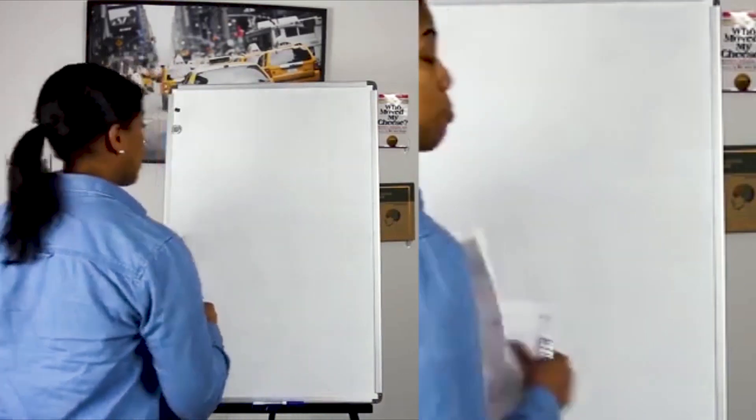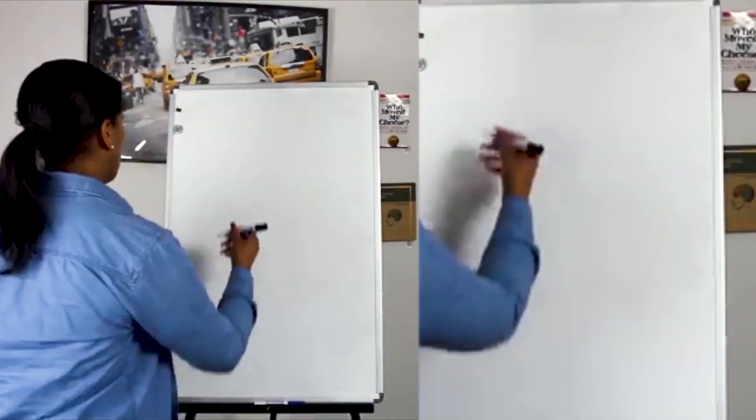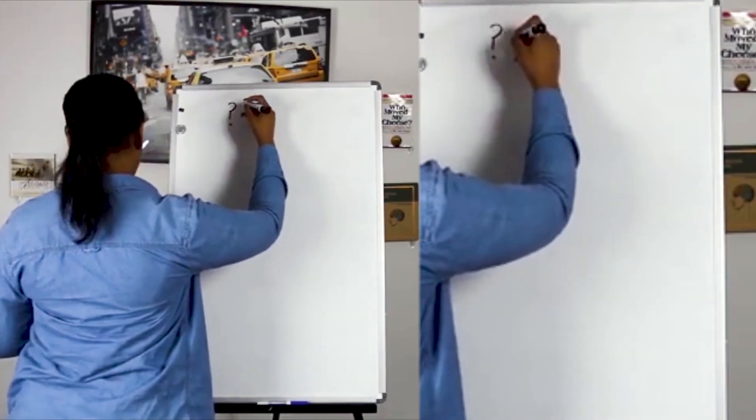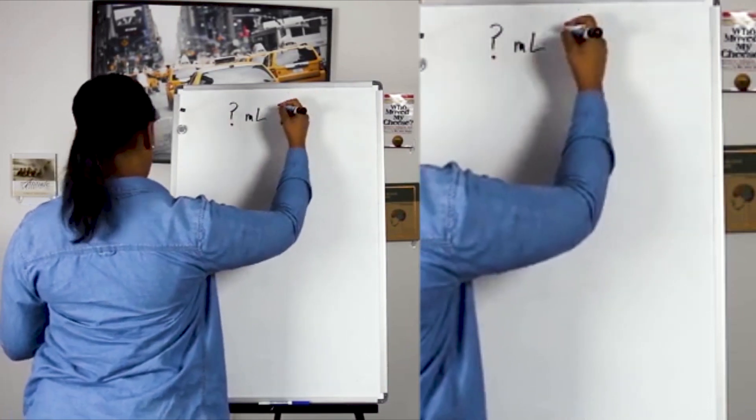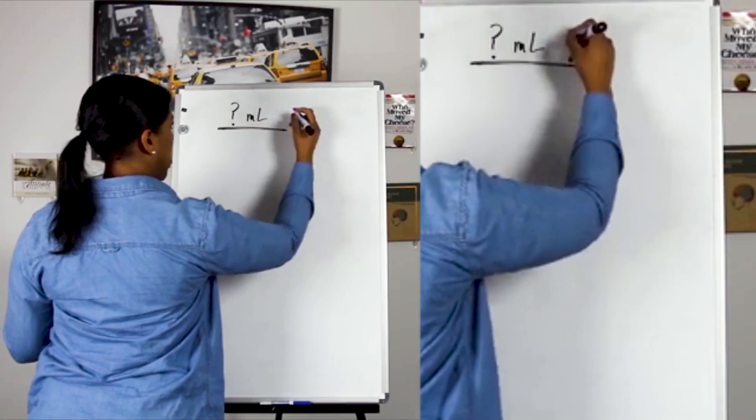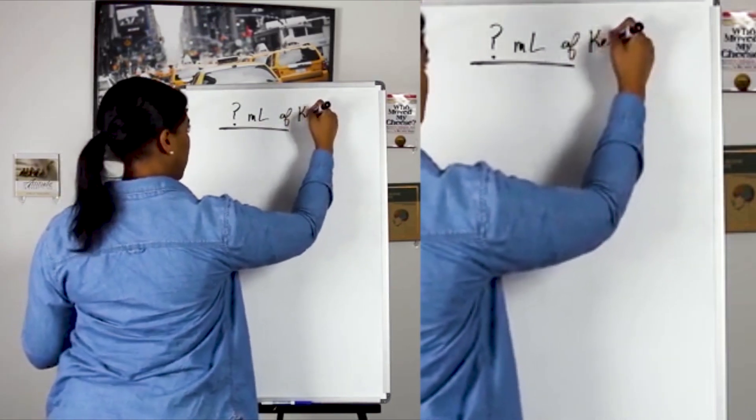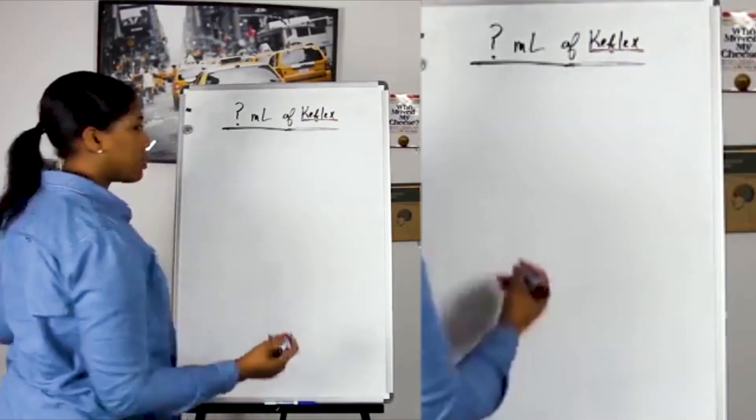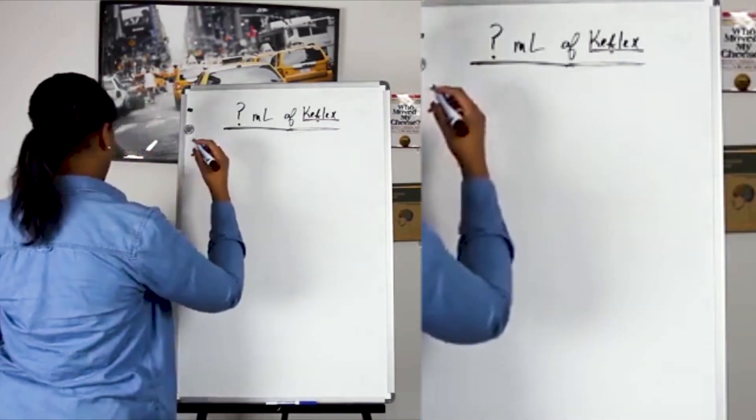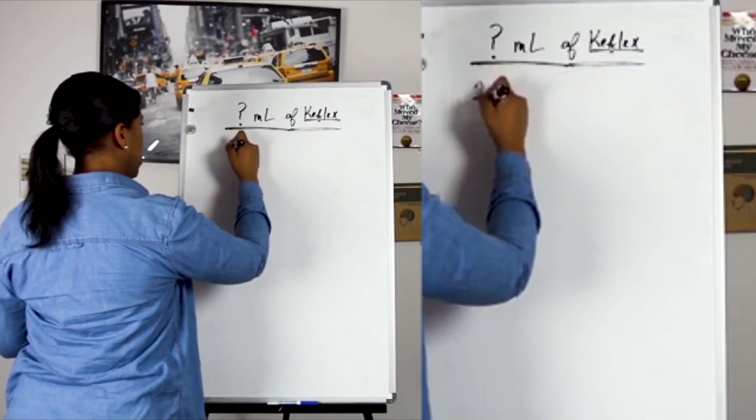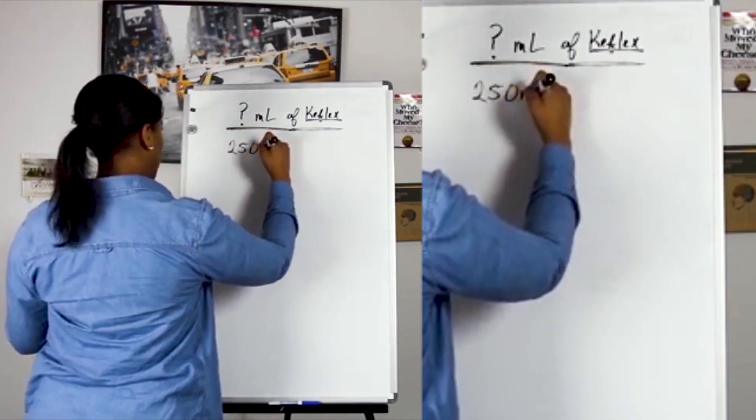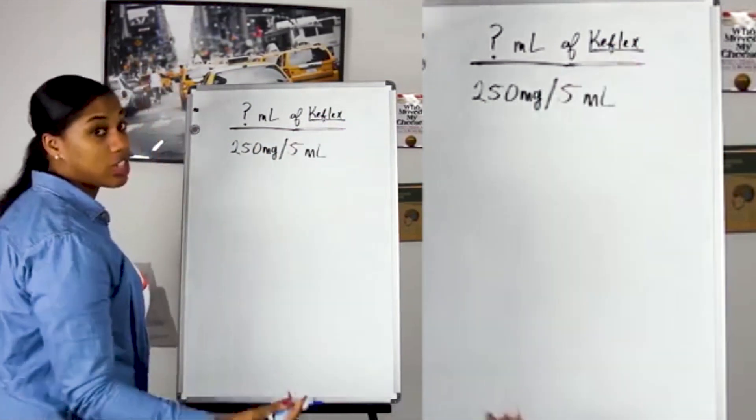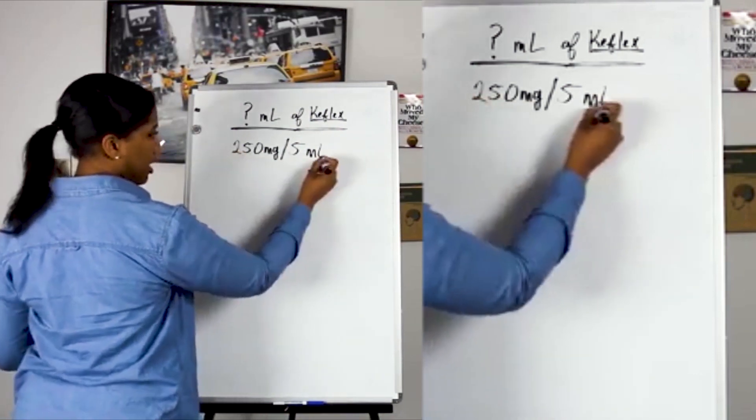So let's break it down like this. This problem, I promise you, it's not as hard as you think. Let's look at what they're asking us for. They're asking us for how many milliliters of Keflex, that's the name of the medication. We know that 250 milligrams is in every 5 milliliters of this particular medication. This is basically a concentration that they've given us here.